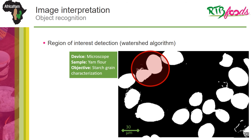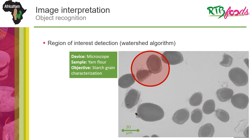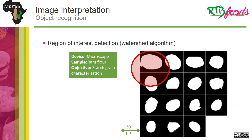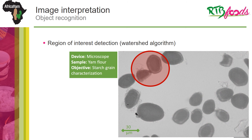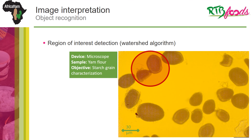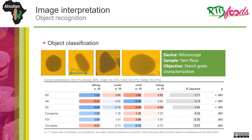Depending on the objectives, many other techniques exist in order to identify the region of interest. For example, if you want to distinguish between two objects that are touching each other, it is possible to use the watershed algorithm. In this example, it allows to identify each starch grain of a yam flower in order to characterize its shape and size. Once each starch grain is identified, it is possible to use some classification model to link the shape characteristics to the shape classes usually used in the literature: round, ovoid, elongated, or triangular.